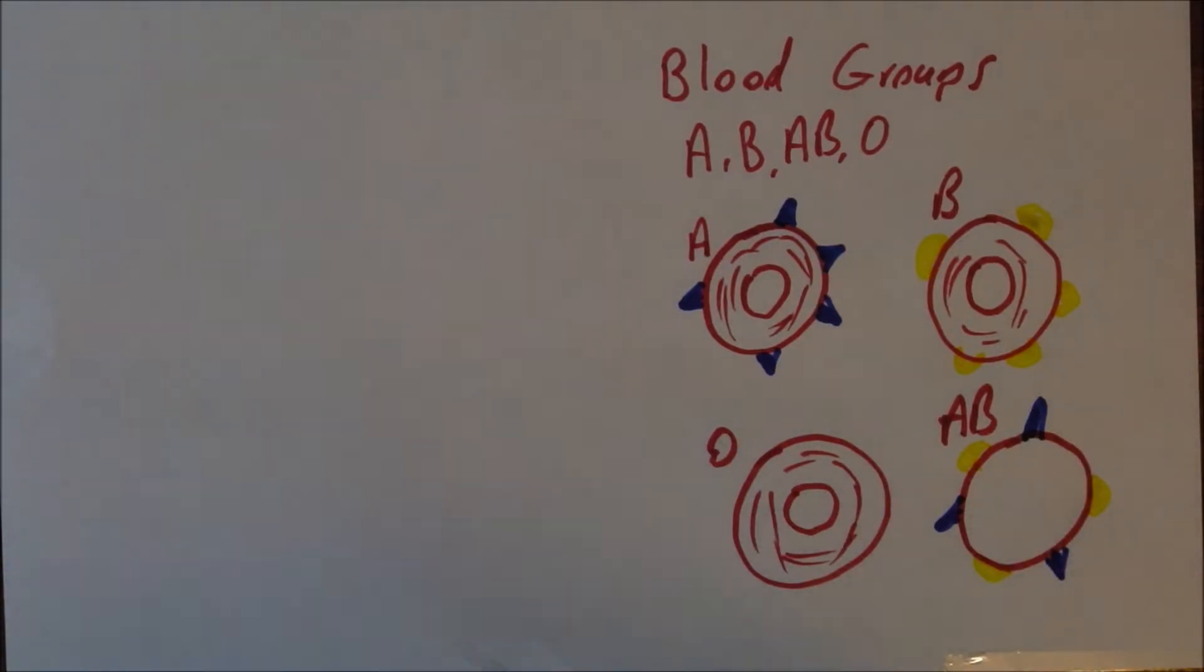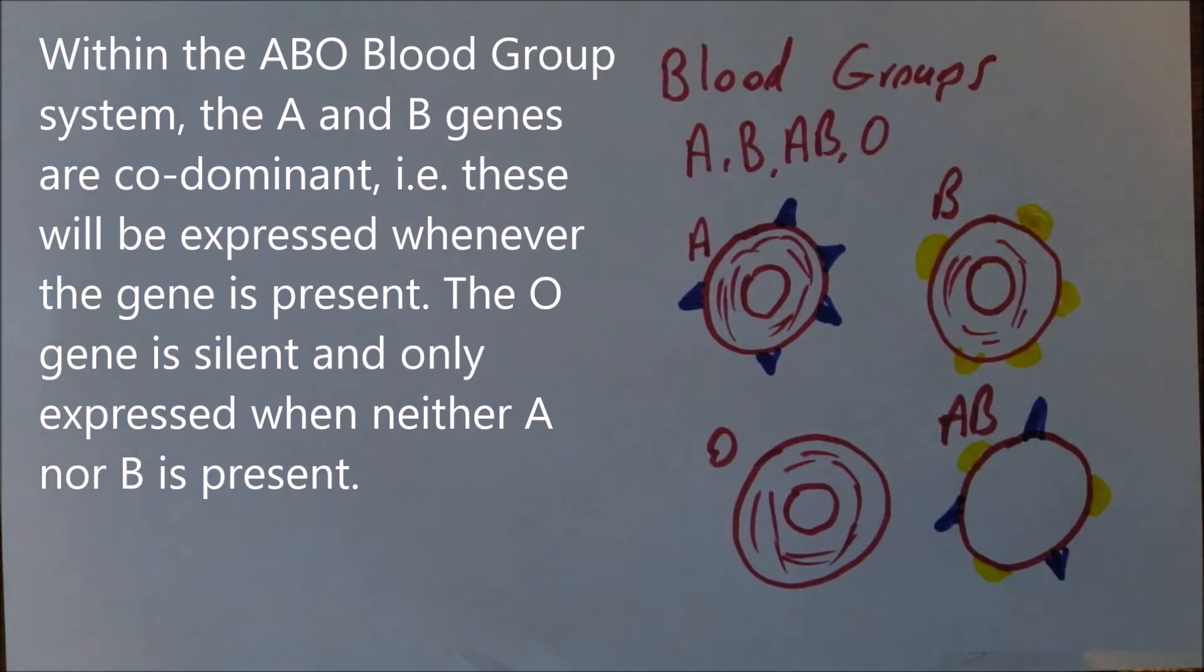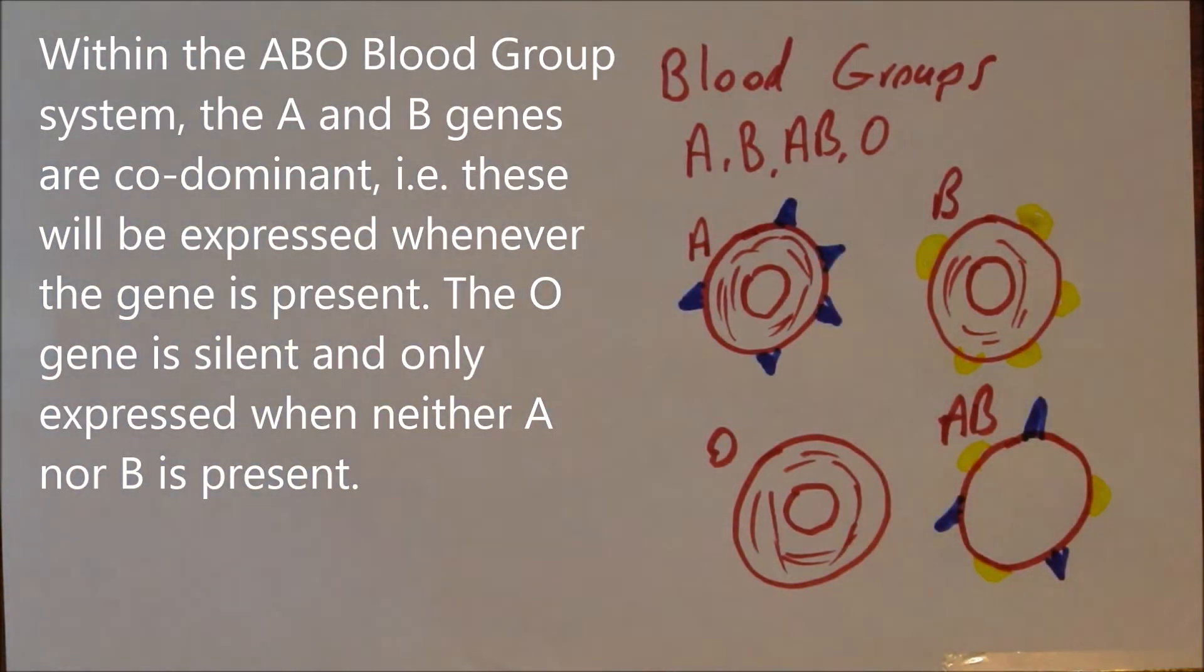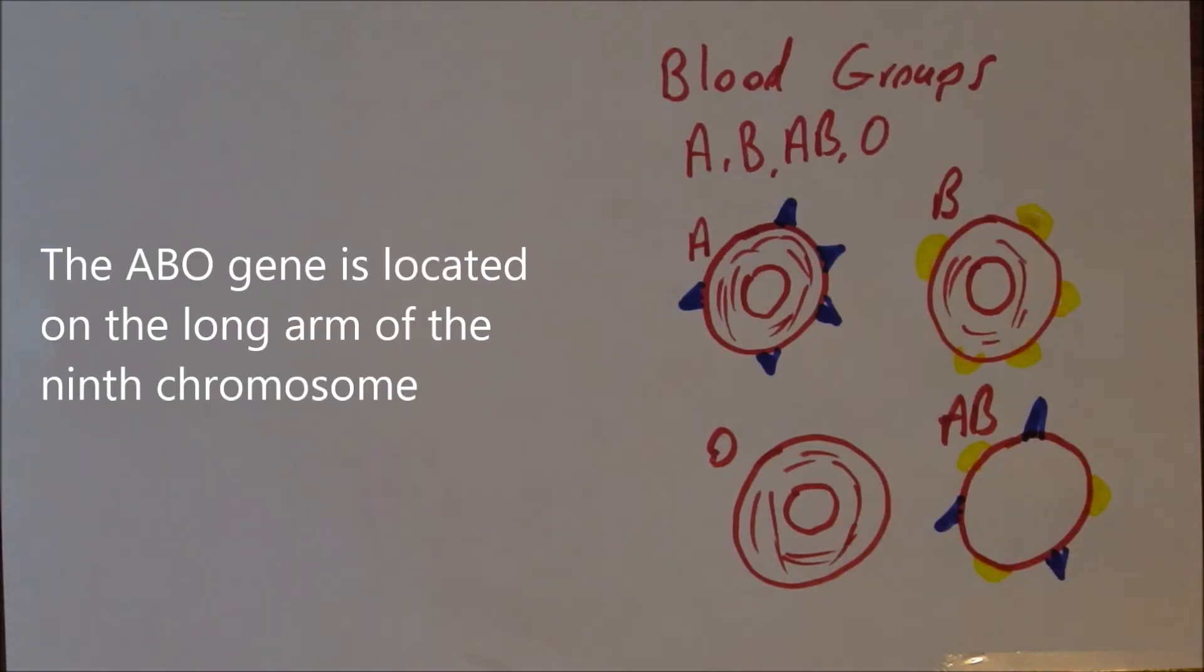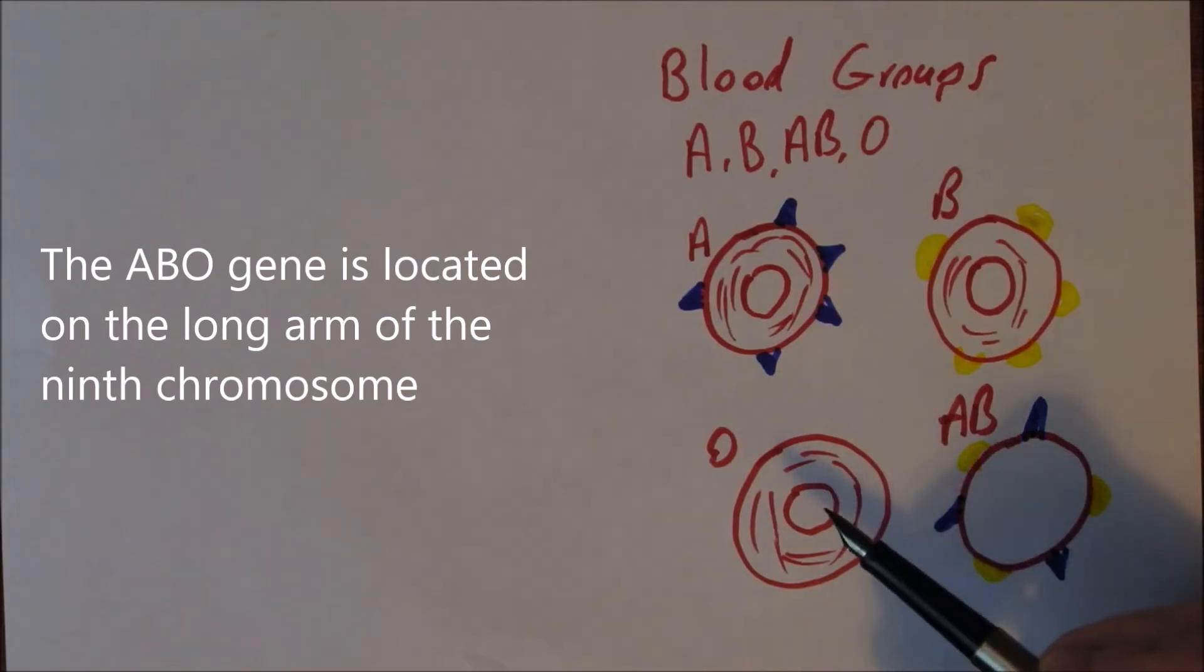Now the thing about the antigens is they are genetically determined as we've said and also they are dominant. So blood group A antigen is dominant. Blood group B antigen is dominant. O is recessive. Actually it's only one blood group gene but it comes as three alleles.